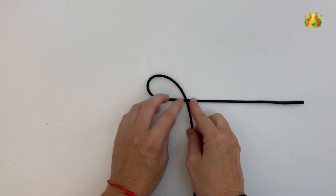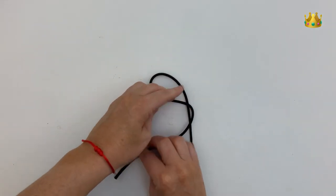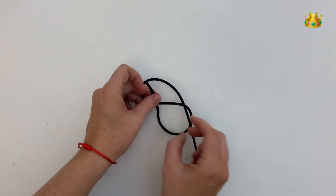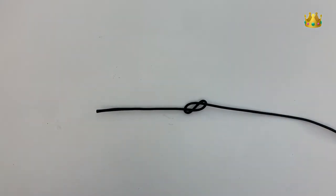Gently holding that loop there, and now with this cord on the right we bring that down over the bottom cord and then underneath so we can bring it up this loop on the left hand side. Pulling it nice and tight.